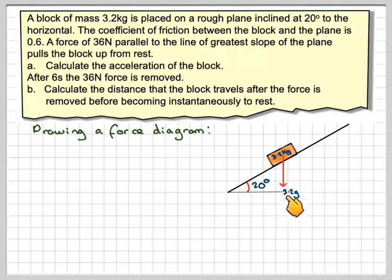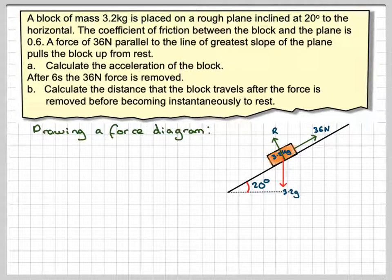We've got a weight acting downwards of 3.2g Newtons. We've got the normal reaction of the block with the plane. We've got the force pulling it upwards, and because it's rough, there will be friction. And as it's on the point of moving or moving, F will be equal to mu R.